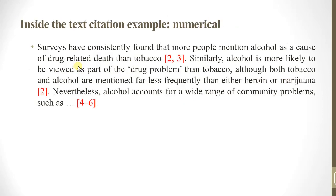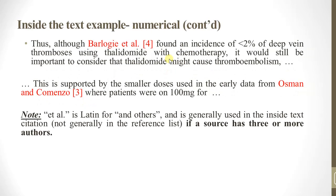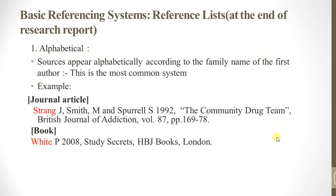For an in-text citation example: in America, a study found more policies on alcohol and drug-related issues related to tobacco. 'Et al.' is Latin for 'and others' and is generally used in in-text citations when a source has three or more authors. It is not generally used in the reference list.